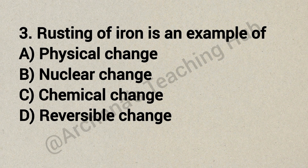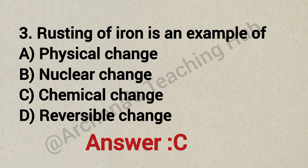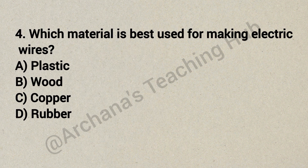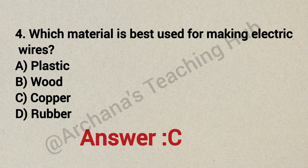Question 3: Rusting of iron is an example of — Option A: physical change, Option B: nuclear change, Option C: chemical change, Option D: irreversible change. Correct answer is Option C: chemical change. Question 4: Which material is best used for making electric wires? Option A: plastic, Option B: wood, Option C: copper, Option D: rubber. Correct answer is Option C: copper.